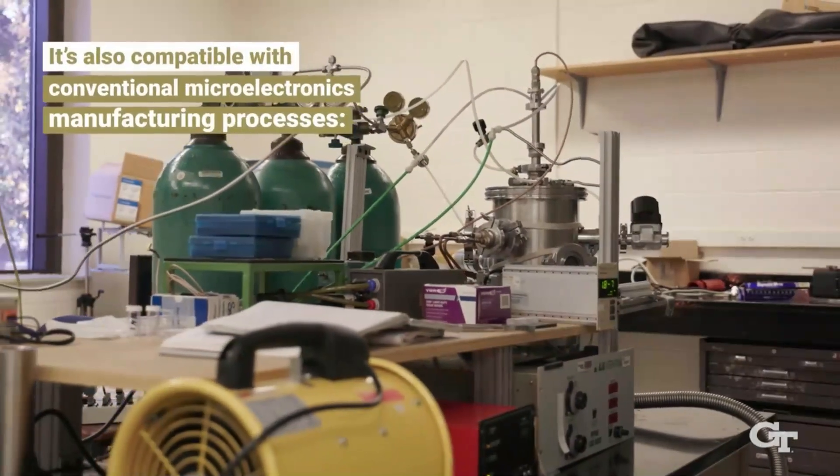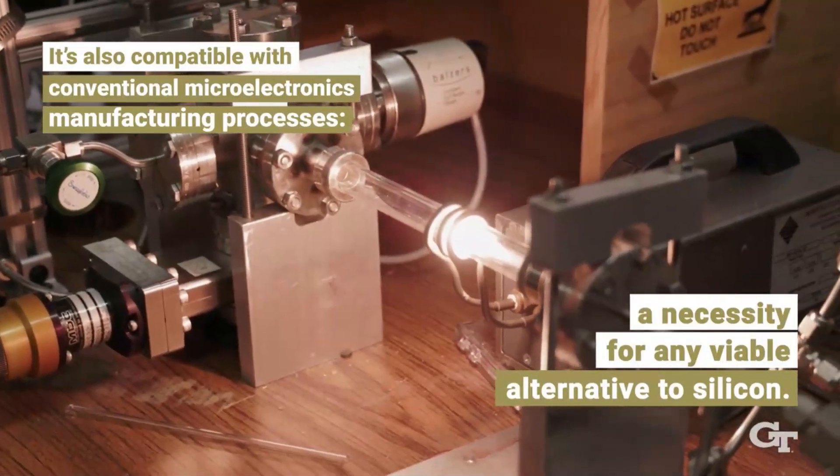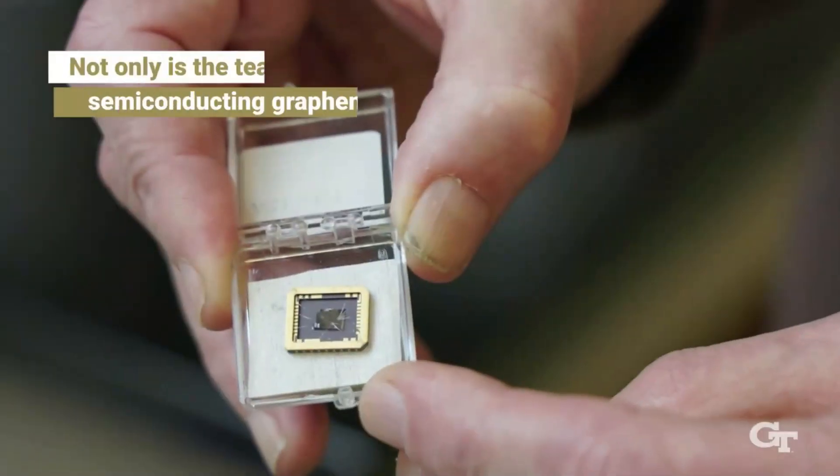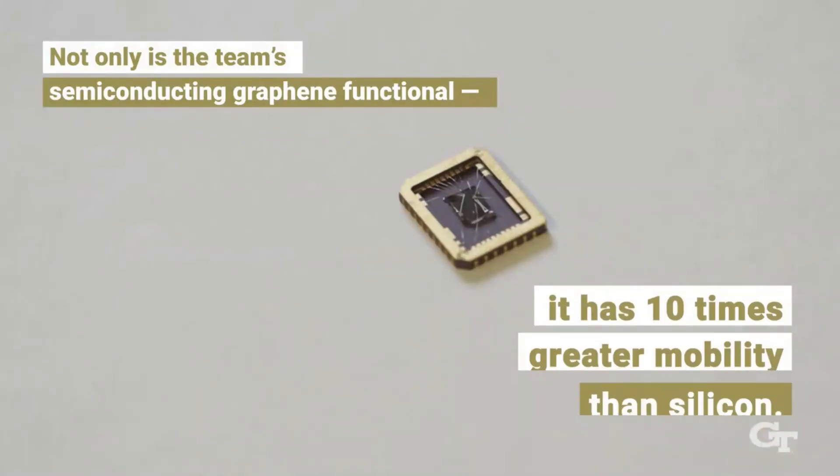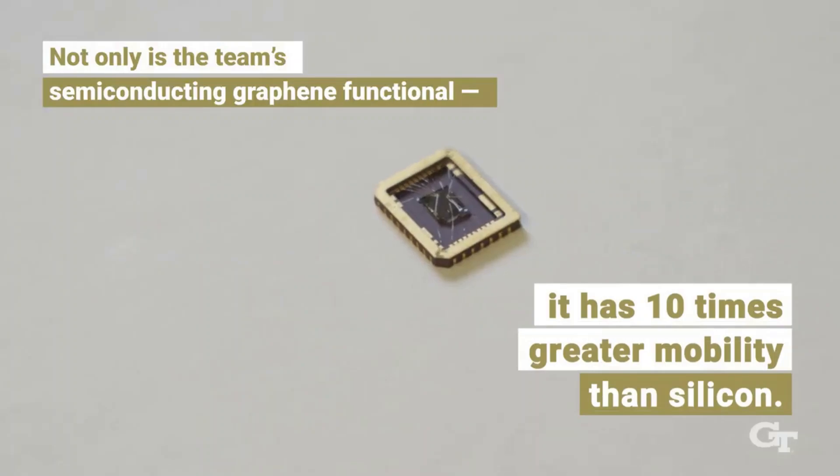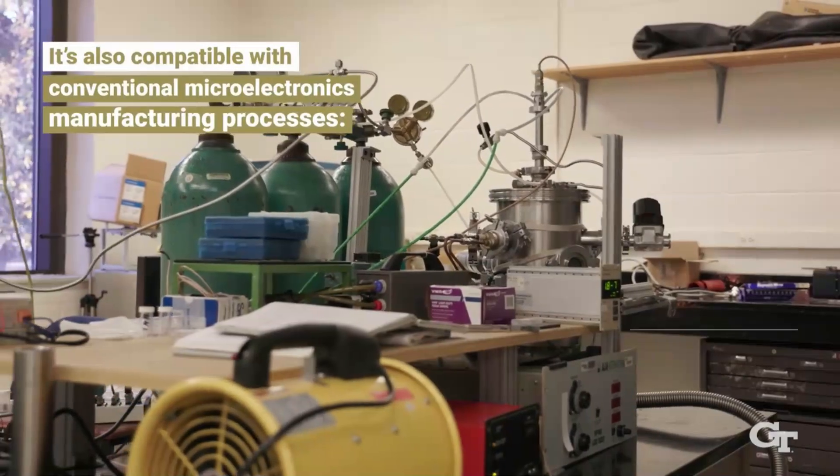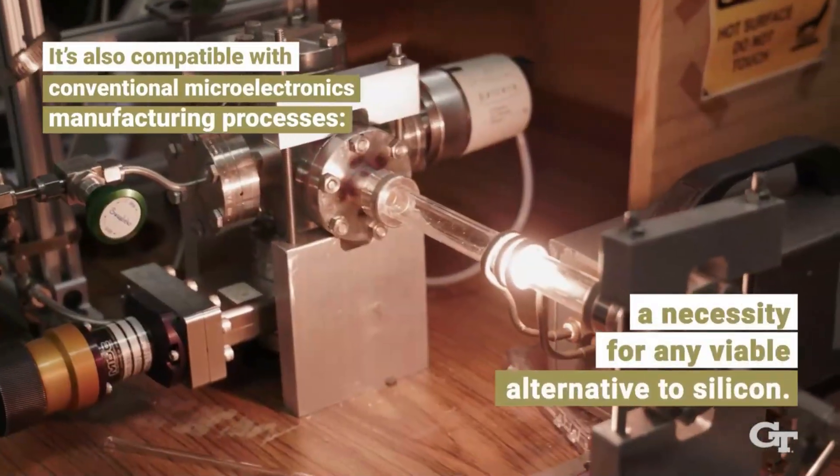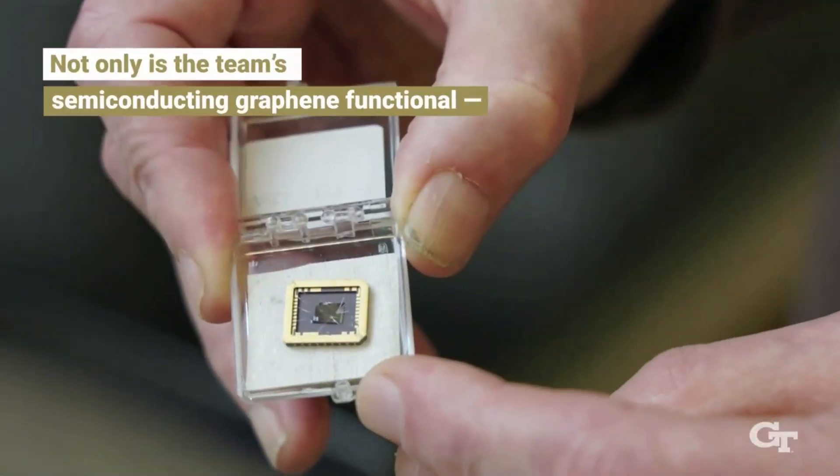According to Ma, graphene didn't have the right band gap and couldn't switch on and off at the correct ratio, which has long been a problem in graphene electronics. Numerous people have attempted to solve this over the years using a range of techniques. Her approach closes the band gap and represents a major step toward the realization of graphene-based electronics, she added.